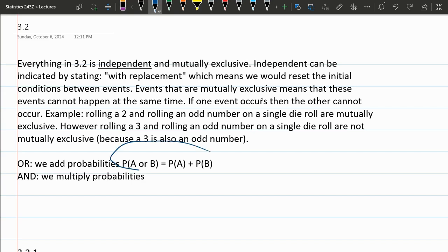If we have OR, we add the probabilities as long as they're mutually exclusive. If we have the word AND, we multiply probabilities as long as they are independent.